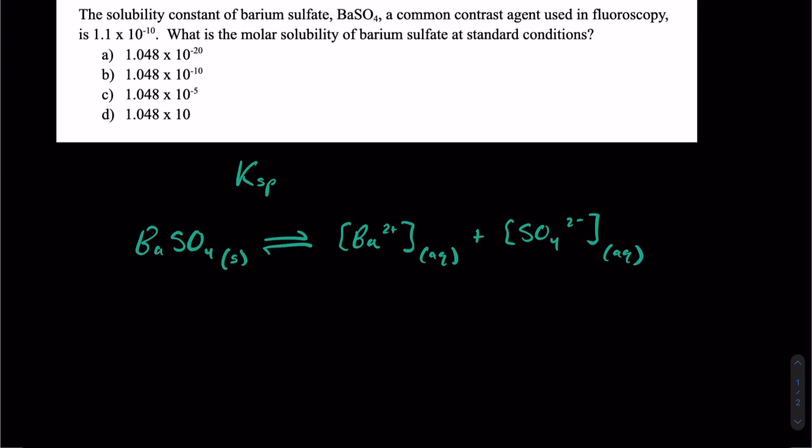And so just like in any KEQ, we're going to have our concentrations of our products divided by the concentrations of our reactants. So we have the concentration of Ba2+ times the concentration of SO4 2-, and then we get to the concentration of barium sulfate here. The problem is we can't really measure a concentration of a solid, so we actually just leave that off. That's practically just going to be 1 here. So we can simplify this to just the concentration of Ba2+ and SO4 2-.